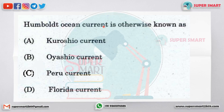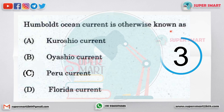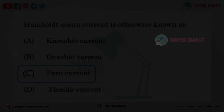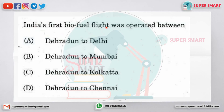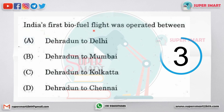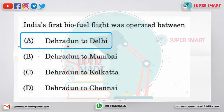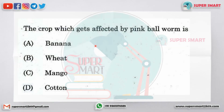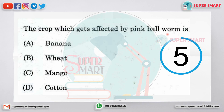The Humboldt Ocean current is otherwise known as the Peru current. India's first biofuel flight was operated between Delhi to Delhi. The crop which gets affected by pink bollworm is dash — the answer is cotton.